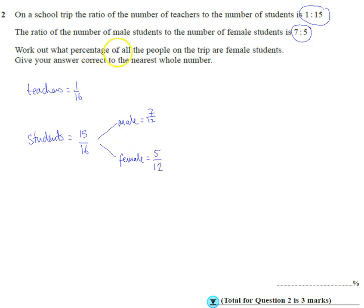So we want to find out what percentage of all the people on the trip are female students. To work that out, we want to do 15/16 times 5/12. We can either just multiply it into our calculator or we can turn to a fraction and then turn to a percentage afterwards.